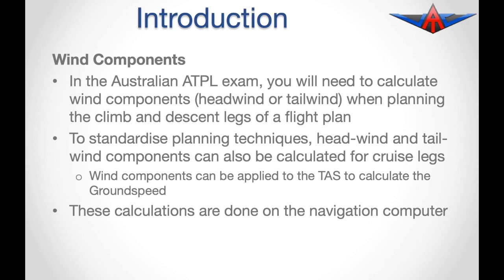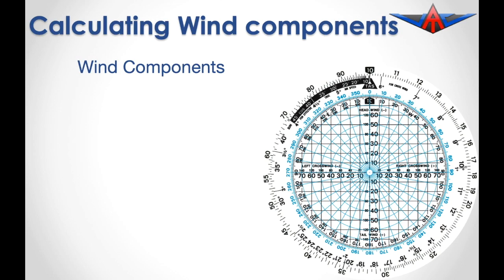These calculations are done on the navigation computer. For our example that we will work through, we are going to use a wind of 240 degrees magnetic at 120 knots, a true airspeed of 450 knots with a track of 295 degrees magnetic.